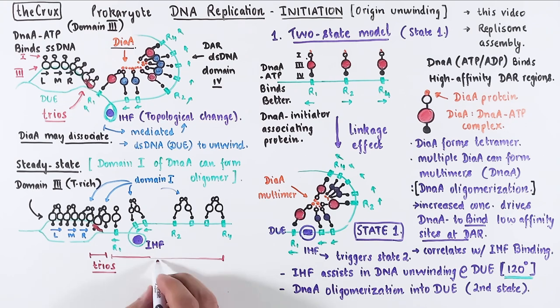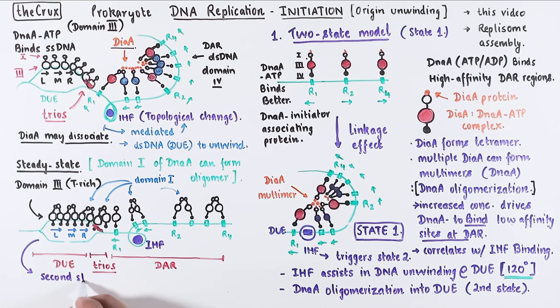Alright, this assembly of DnaA on the origin completes the second state of the two-state model, which has a single-stranded DNA protein complex, whereas the first state is on the DAR region in a double-stranded DNA protein complex. This is how the two-state model posits origin unwinding, which then leads to the recruitment of helicases and other proteins needed for replosome assembly and continuation into DNA replication.